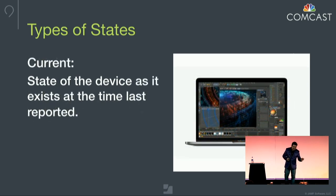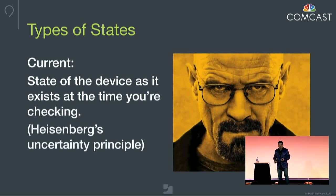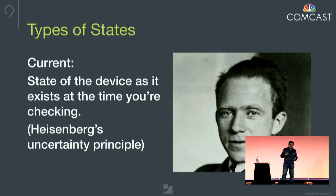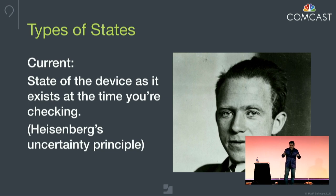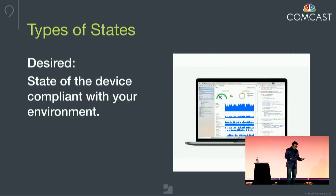Your current state is the state of the device that exists at the time it was last reported. This brings me to the Mac Admin corollary of the Heisenberg uncertainty principle: you can only know the state of the device at the time it last reported. So you can never know the state of the actual device as it exists right now.